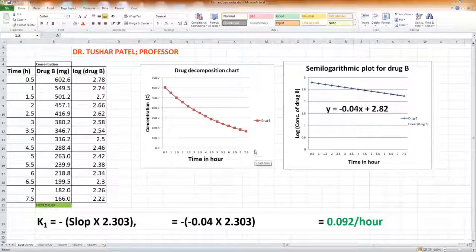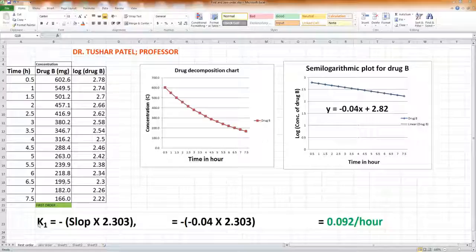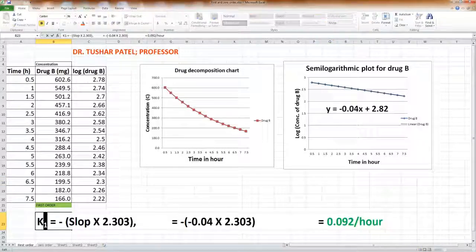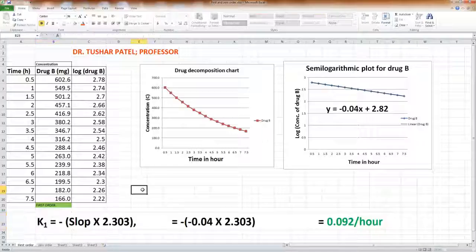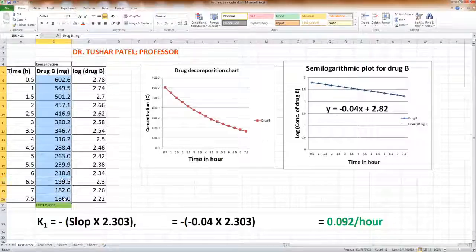Now let us calculate the first-order reaction rate constant using the graphical method. Here, the data for the decomposition of drug B are given in column B showing the amount of drug in milligrams, and in column A there is time in hours.